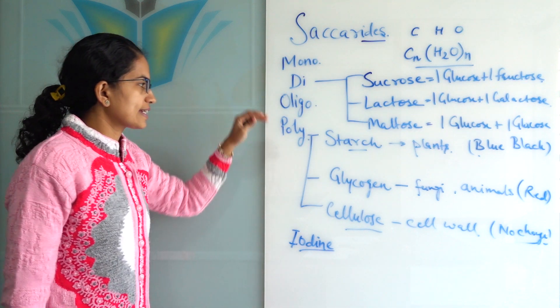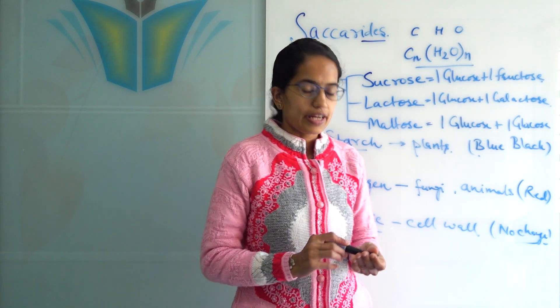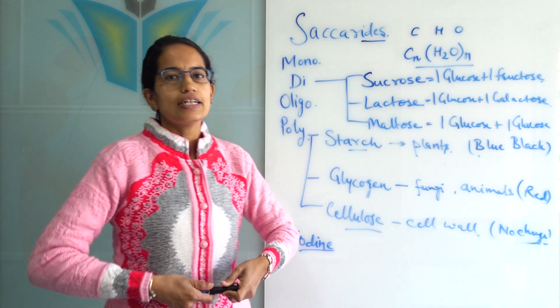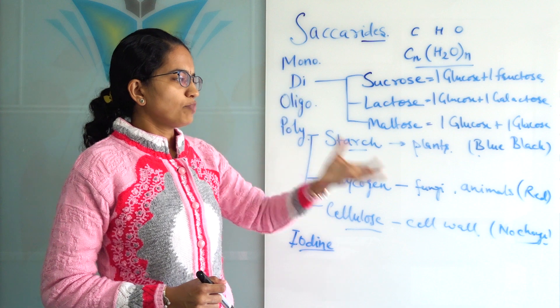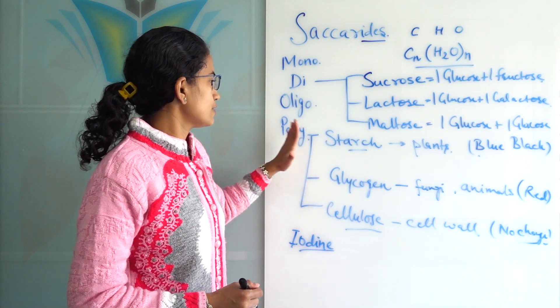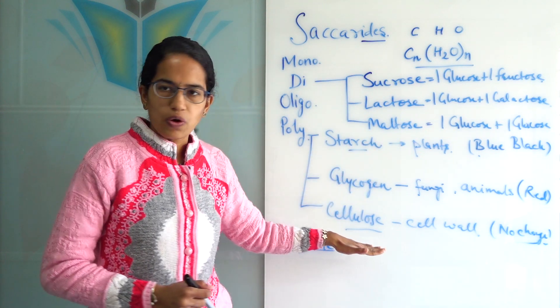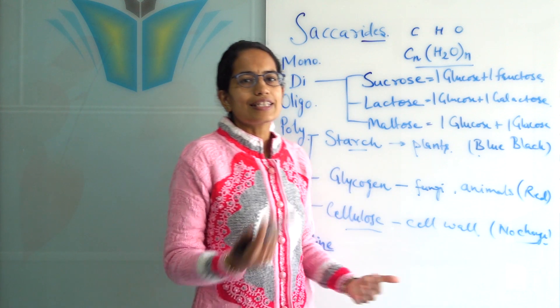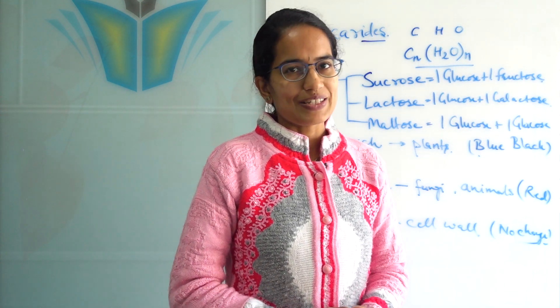So, these are the common disaccharides and polysaccharides. And saccharides which are the unit of carbohydrate are known as the energy giving food. Commonly seen in potato, rice. So, those are the common examples. And we can have the iodine test for the polysaccharides to identify whether it is a starch, glycogen or a cellulose. In the next lectures we would understand many interesting topics in biology. Stay tuned. Good luck.